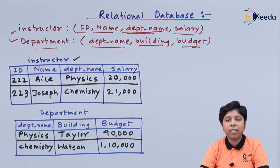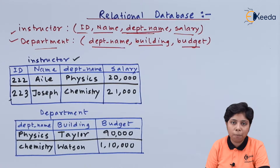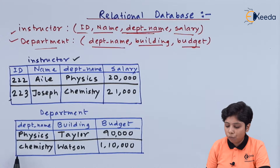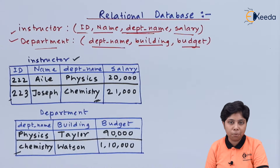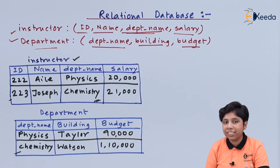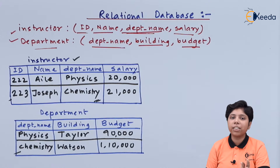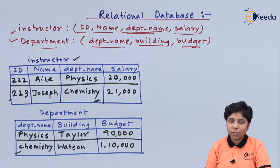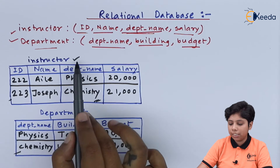The foreign key can have duplicate values in the instructor table, and that is not data redundancy, because deleting a particular instructor record — say, Joseph — will not affect the chemistry department at all. However, if we delete the chemistry department from the department table, the instructor table will then contain inconsistent data. That is the relational part: the table at the logical or user level view. Next, we will go to SQL DDL and DML, which are used to access and manipulate data and schemas.